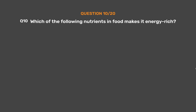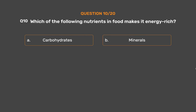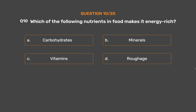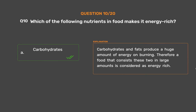Question number 10. Which of the following nutrients in food makes it energy rich? Option A - Carbohydrates, Option B - Minerals, Option C - Vitamins, Option D - Roughage. The correct answer is Option A - Carbohydrates. Carbohydrates and fats produce a huge amount of energy on burning. Therefore, food that consists of these two in large amounts is considered energy rich.